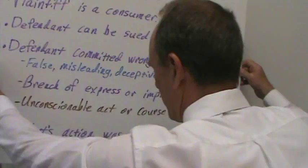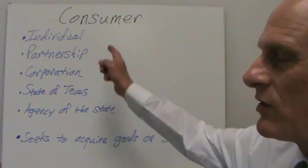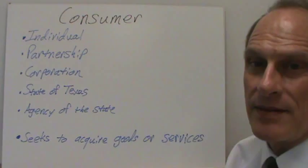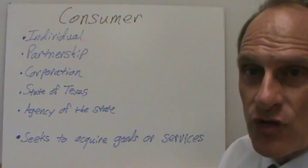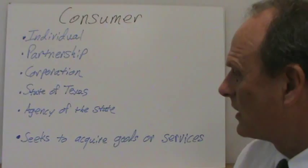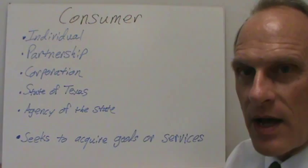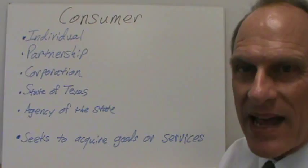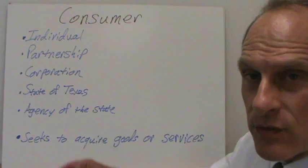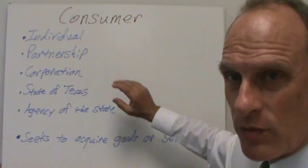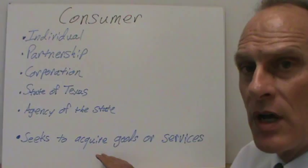What about the consumer? A consumer can be an individual, or an artificial person like a partnership or a corporation. A consumer can also be the state of Texas or an agency of the state of Texas. There is a limit on business consumers — currently around $25 million or more in assets. But the definition of consumer is quite broad, and a consumer is someone who is seeking to acquire goods or services.